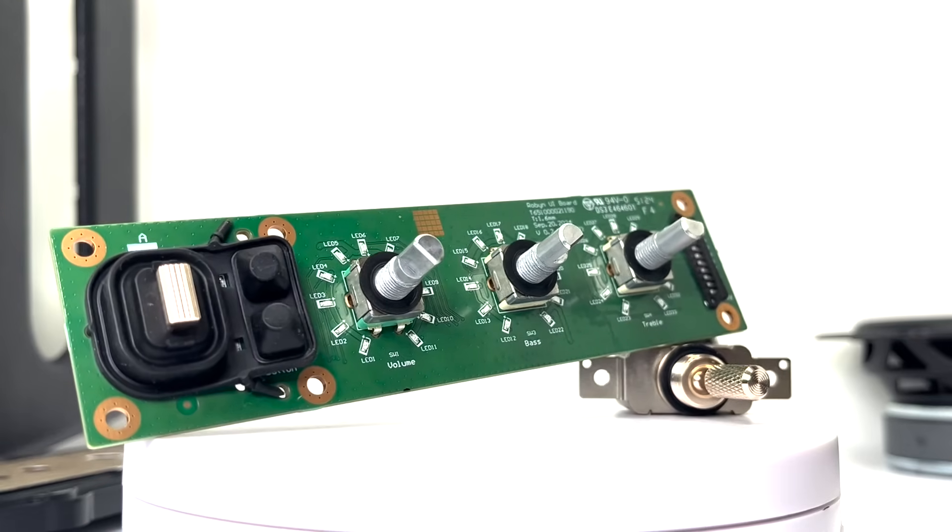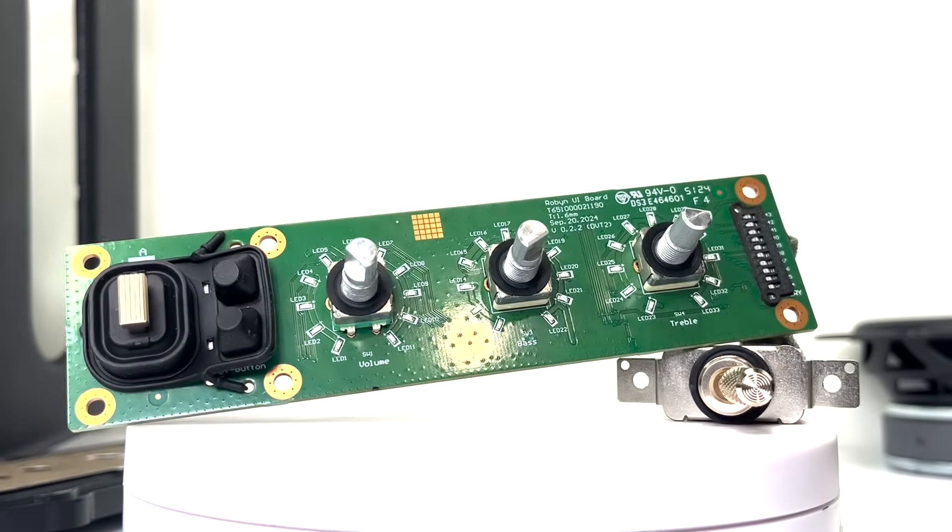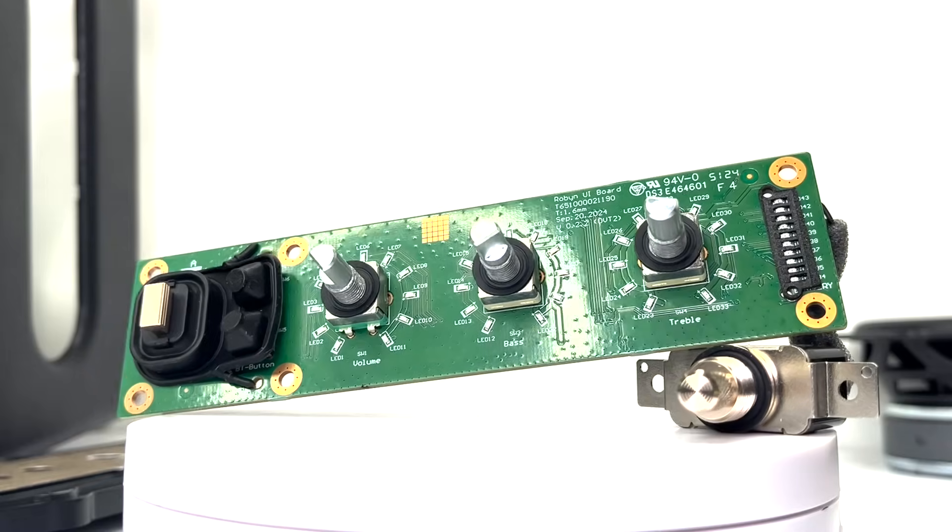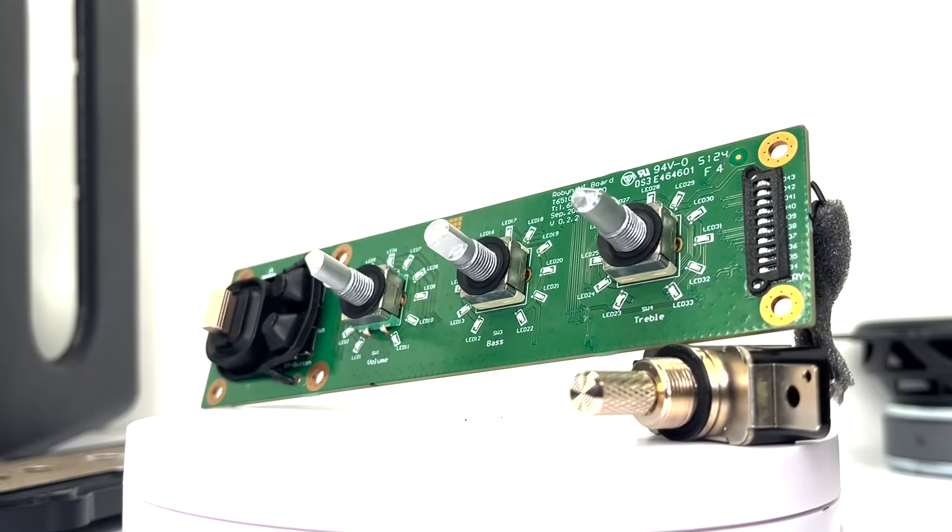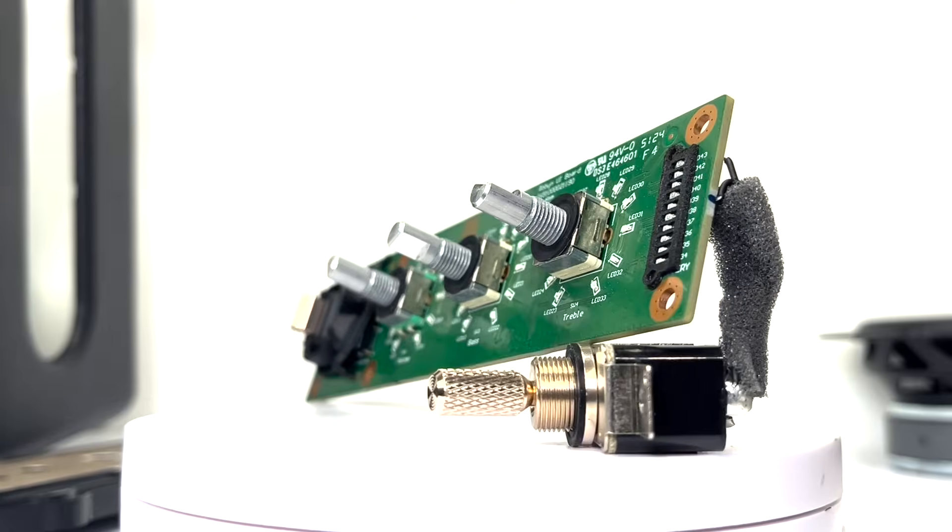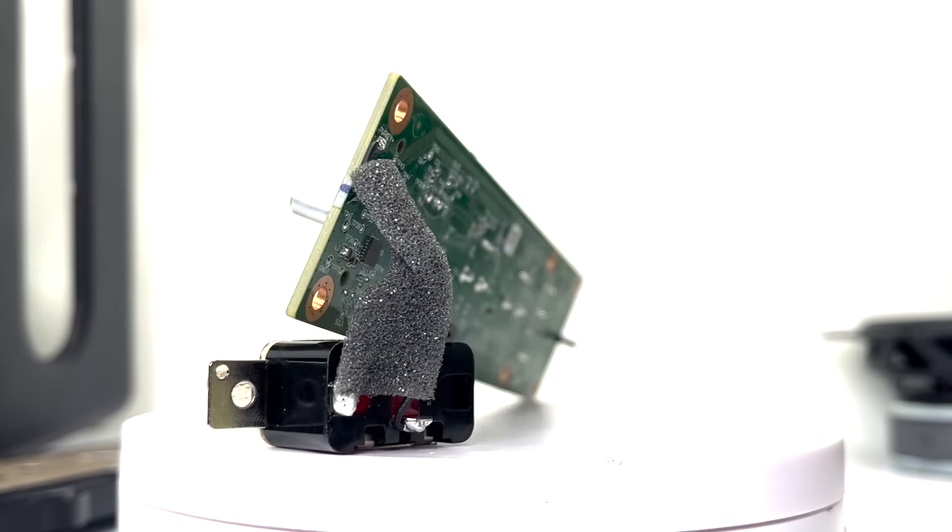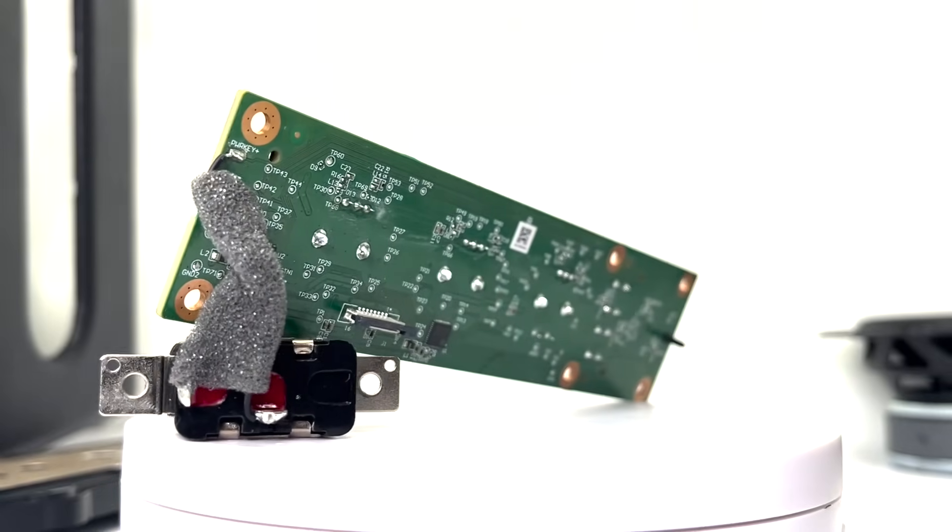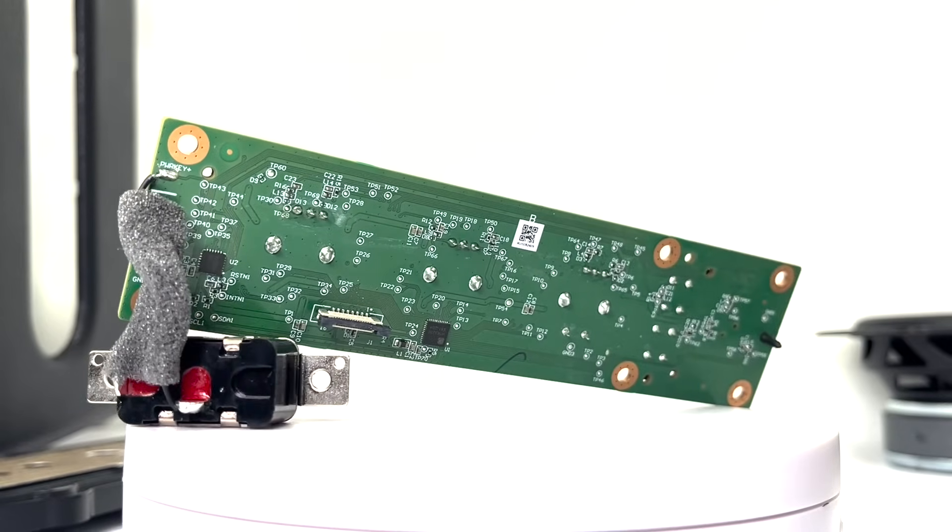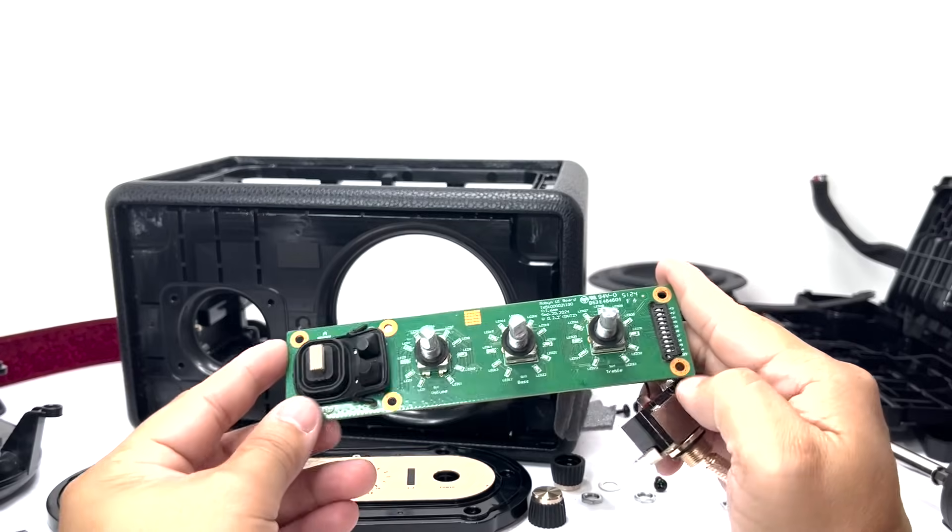Now here we have the control board, featuring Marshall's iconic knobs and buttons for intuitive user interaction. It includes dedicated controls for bass, treble, volume, power on and off, media navigation, the M button, and Bluetooth pairing. This board handles all user input, making it the central hub for customizing and controlling your listening experience.